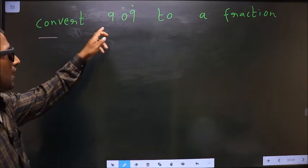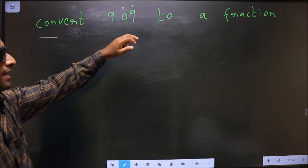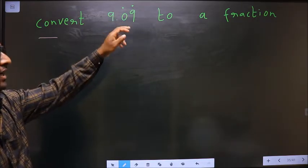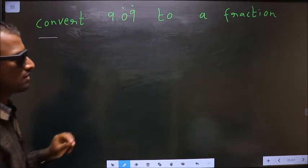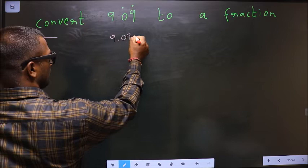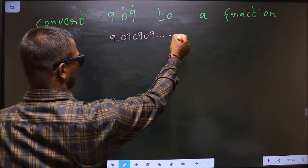Convert 9.09 with dot on 0 and 9 to a fraction. Dot on 0 and 9 means this: 9.09, 0, 9, 0, 9 and so on.